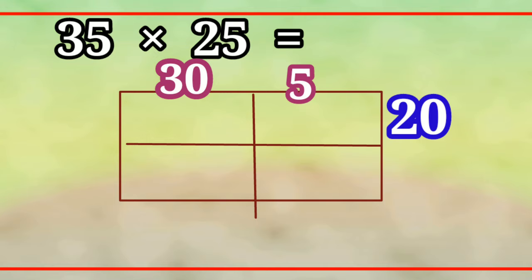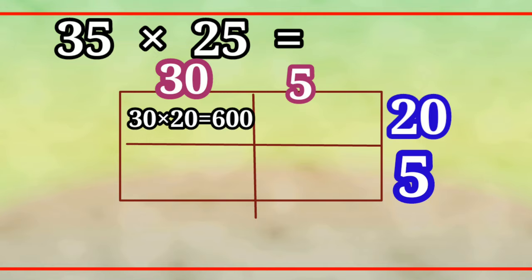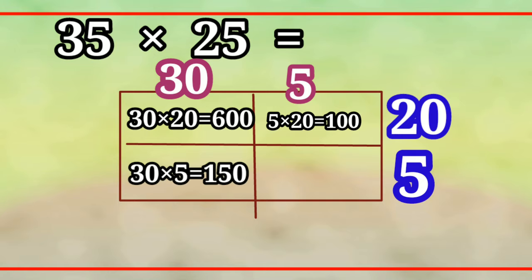First, 30 x 20 = 600. Next, 5 x 20 = 100. Next, 30 x 5 = 150. Next, 5 x 5 = 25.